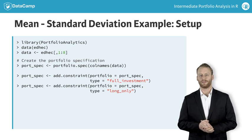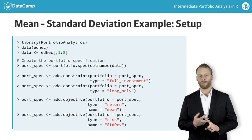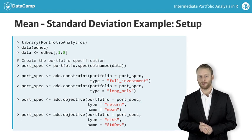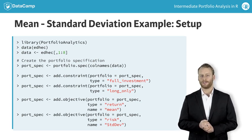The full investment constraint means that the weights must sum to one. The long only constraint means that all weights must be positive. You have two objectives in the portfolio problem: one to maximize portfolio mean return and one to minimize portfolio standard deviation. For the mean return objective, the objective type is return because you want to maximize the objective, and the objective name is mean for portfolio mean return. For the standard deviation risk objective, the objective type is risk because you want to minimize the objective, and the objective name is StdDev for portfolio standard deviation.